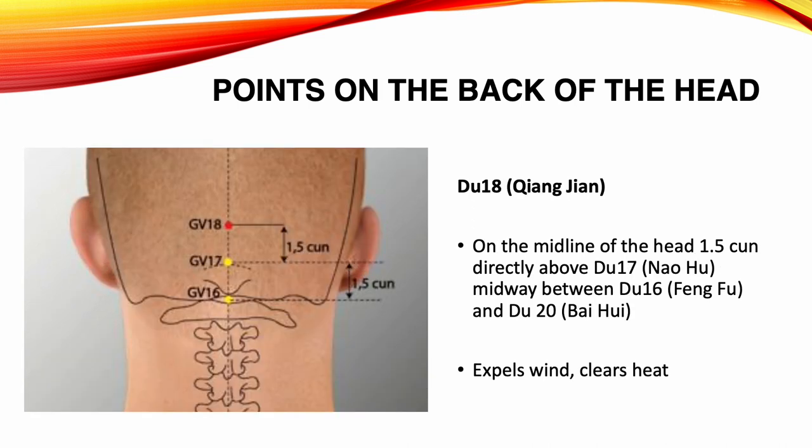Du 18, Qiang Qian. Location: on the midline of the head, 1.5 Sun directly above Du 17, midway between Du 16 and Du 20. Functions: expels wind, clears heat. Indications: headache, neck rigidity, blurred vision, seizures.